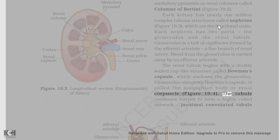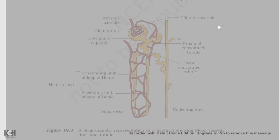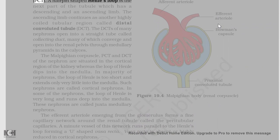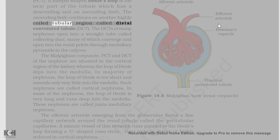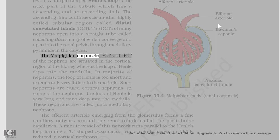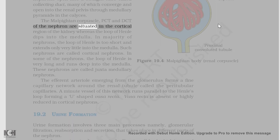The tubule continues further to form a highly coiled network called proximal convoluted tubule, PCT. A hairpin-shaped Henle's loop is the next part of the tubule which has a descending and an ascending limb. The ascending limb continues as another highly coiled tubular region called distal convoluted tubule, DCT. The DCTs of many nephrons open into a straight tube called collecting duct, many of which converge and open into the renal pelvis through medullary pyramids in the calyces. The malpighian corpuscle, PCT, and DCT of the nephron are situated in the cortical region of the kidney whereas the loop of Henle dips into the medulla.